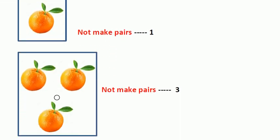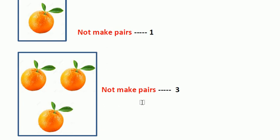Now look at this picture. Do the oranges make a pair here? No. Here one is left — one is extra, one is left without pairing. So we can say that it does not make a pair. In this picture the oranges are not making a pair.